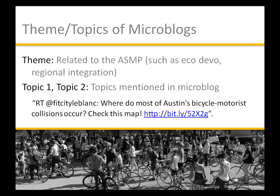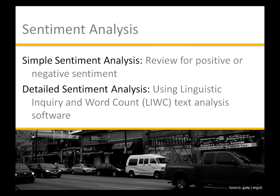Microblogs were organized around theme and topic. The themes were related to the Austin Strategic Mobility Plan, such as economic development, regional integration, and safety. For example, the microblog 'Where do most of Austin's bicycle-motorist collisions occur? Check this map' would have topics of bicycle and automobile, and a theme of safety. SNAP then conducted a simple sentiment analysis, reviewing each microblog to determine positive or negative sentiment. 'Traffic sucks' would be negative; 'It was a beautiful day for my bike commute' would be positive.